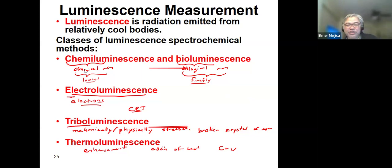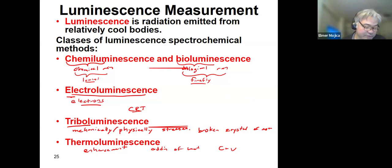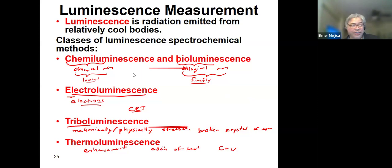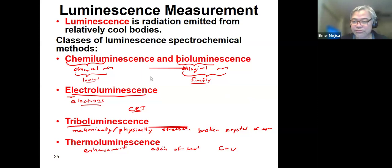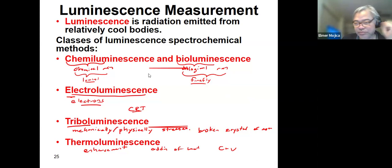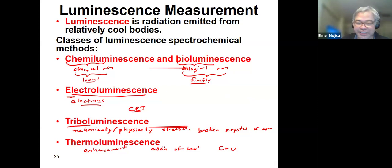Usually the first two — especially chemiluminescence. Chemiluminescence and bioluminescence are employed in analytical procedures. How do they explain in terms of their interaction, transition, and spectra?